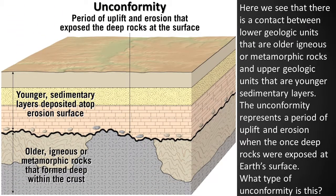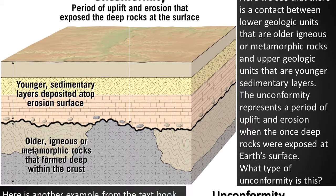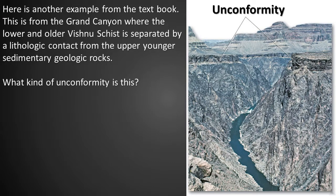Here we see a contact between lower geologic units that are older igneous or metamorphic rocks and upper geologic units that are younger sedimentary layers. The unconformity represents a period of uplift and erosion when the once-deep rocks were exposed at Earth's surface. What type of unconformity is this? That's right — this is a nonconformity. Here's another example from the textbook: in the Grand Canyon, the lower and older Vishnu Schist is separated by a lithologic contact from the upper, younger sedimentary geologic rocks. That is also a nonconformity.